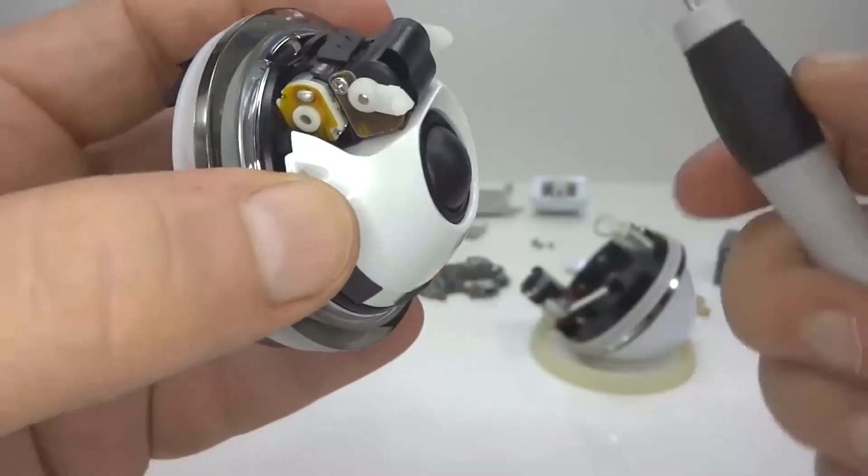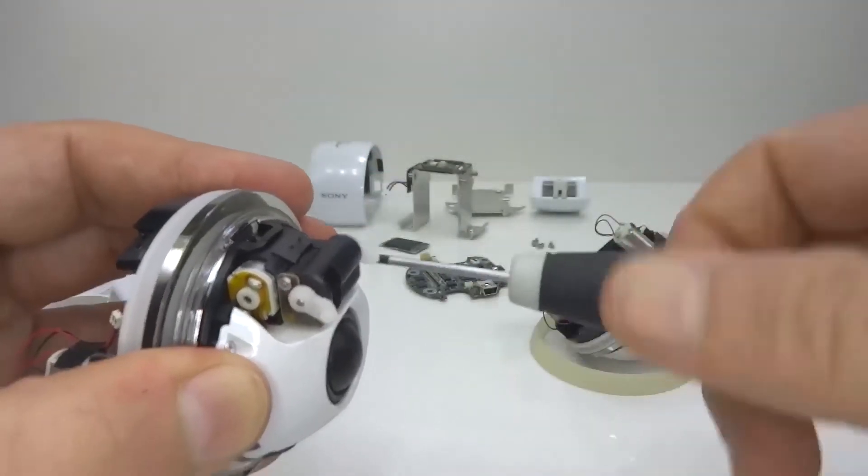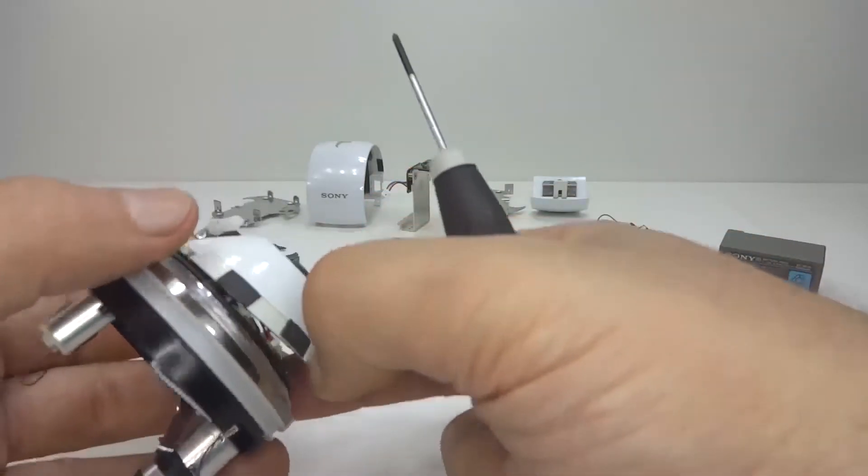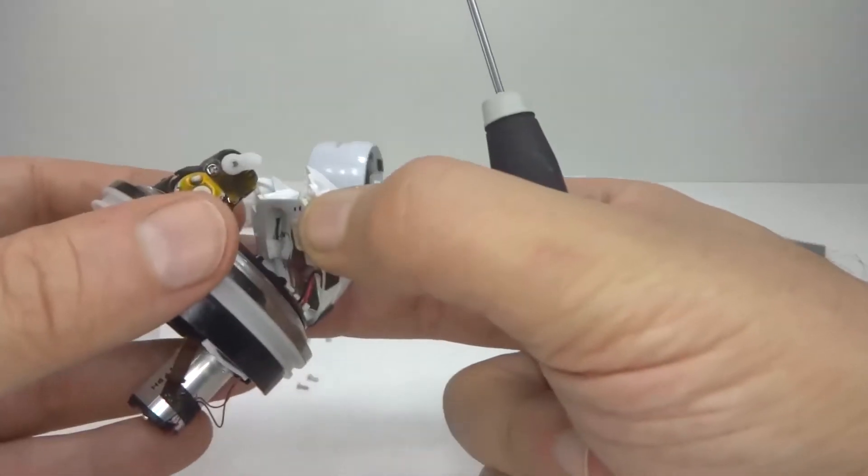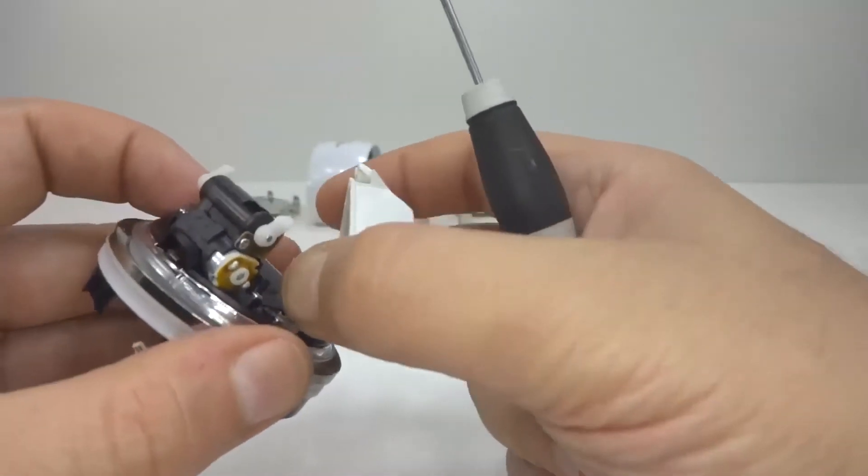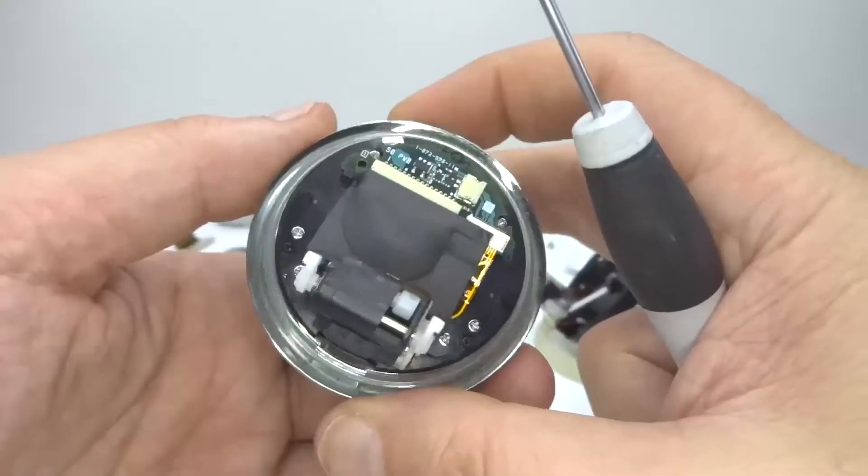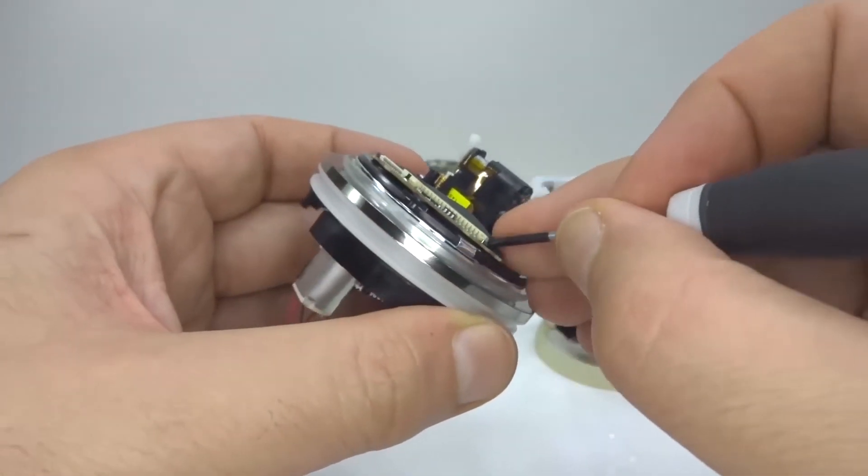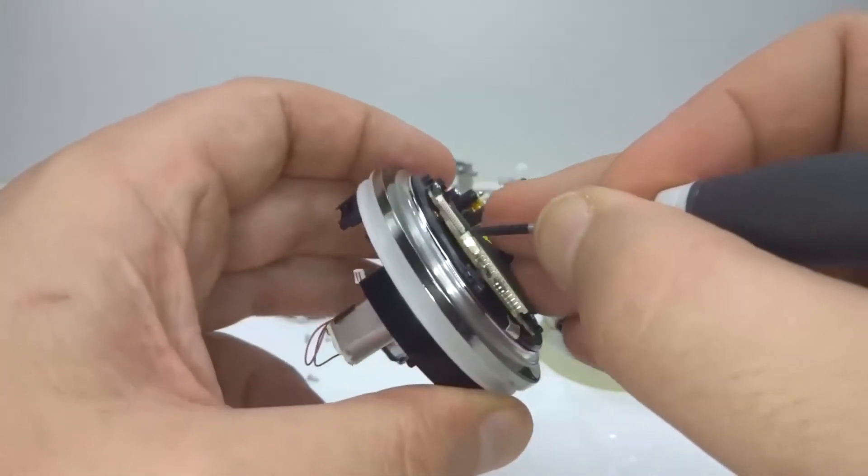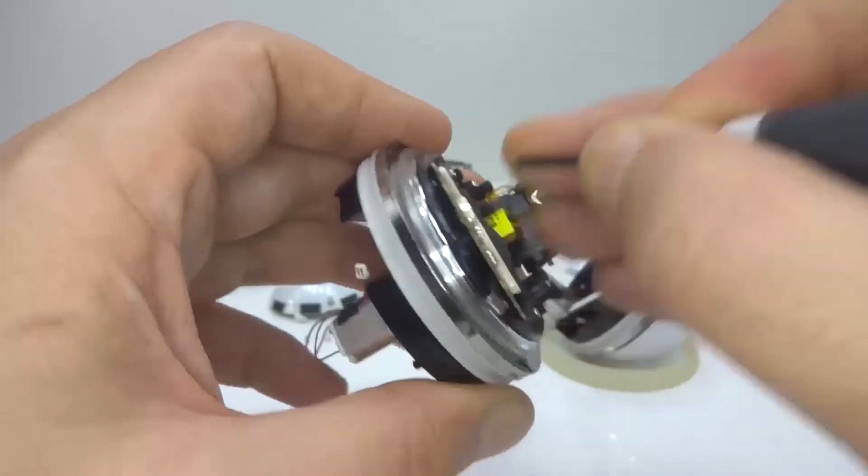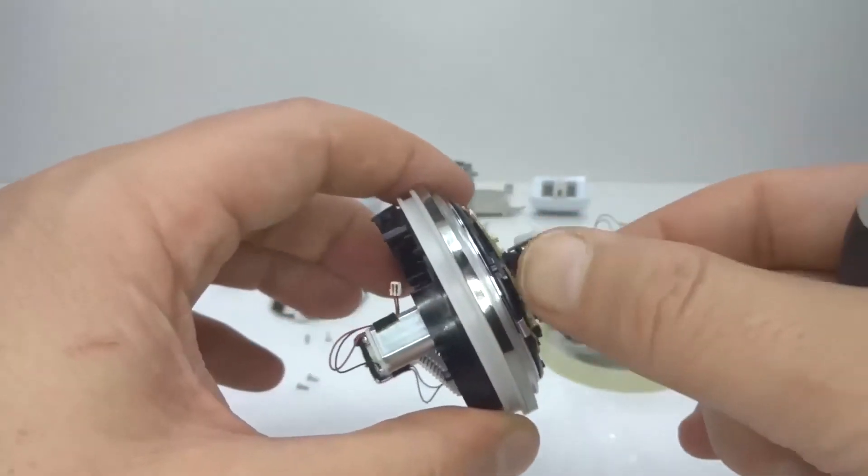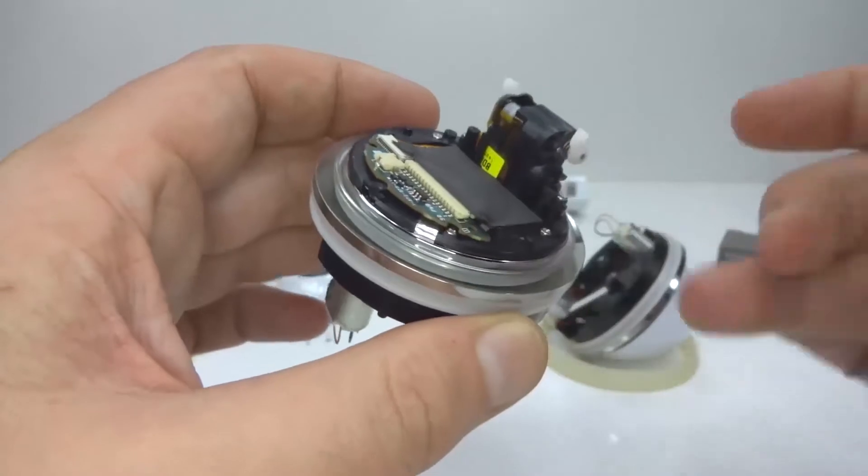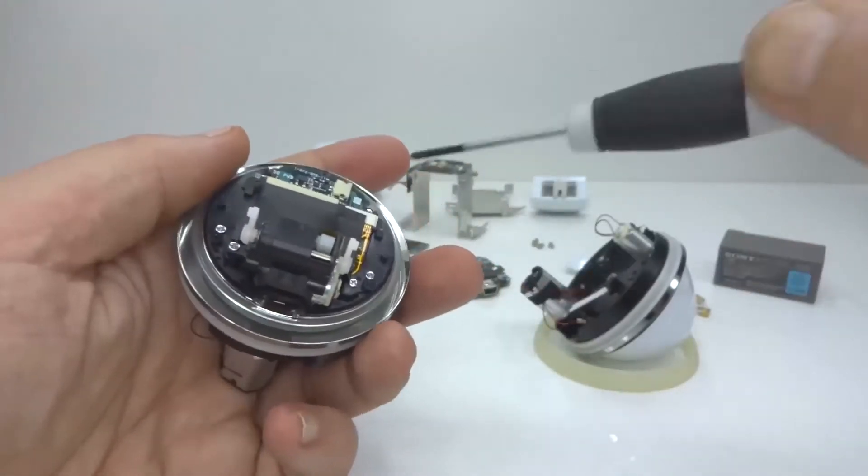So we've got the speaker cone. We've got some more motors there. Sorry. A motor. A motor and a gearing system. And some more screws. Whoa. Okay. Speaker there. We'll have a peek underneath this foam. It's stuck down pretty well. I guess we'll remove some more screws and see what happens.